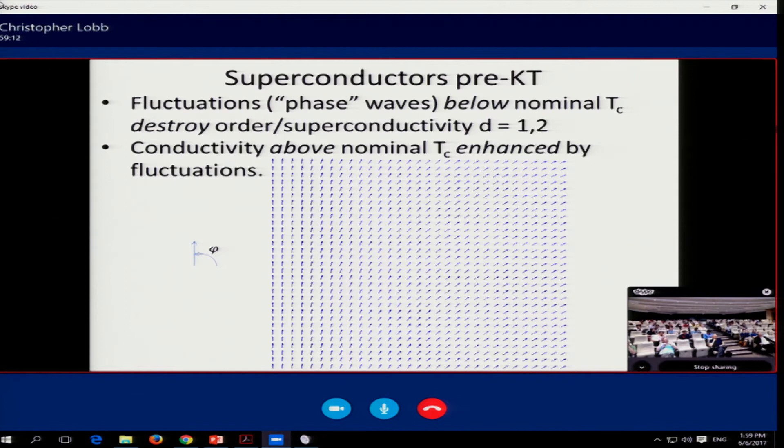So I don't think anyone questions the first bullet point, and it was also understood prior to KT for other systems. Another thing that happened, and was well studied, is that above Tc, you could get momentary fluctuations. They'd come into being and disappear of these phase waves, and they had the effect of increasing the conductivity. Little bubbles of superconductivity would occur in one, two, or three dimensions that would cause a decrease in the resistivity, an increase in the conductivity.